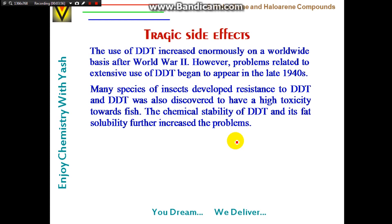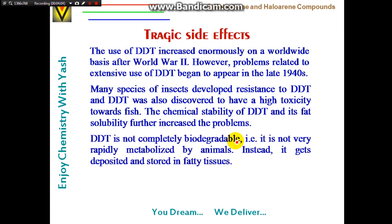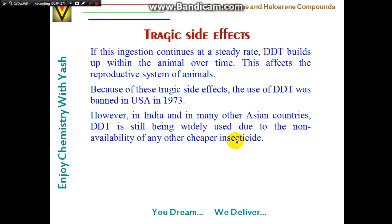DDT's chemical stability and fat solubility are major problems. It dissolves in fat and stores in the body for a longer period, causing damaging effects. It is not completely biodegradable — it is not rapidly metabolized by animals but instead gets deposited in fatty tissues. Continued ingestion causes DDT to build up over time, affecting the reproductive system of animals. Because of these tragic side effects, DDT was banned in the USA in 1973. However, in India and many other Asian countries, DDT is still widely used due to the non-availability of cheaper alternatives and less awareness.